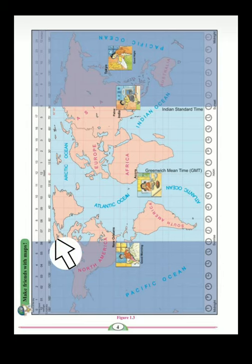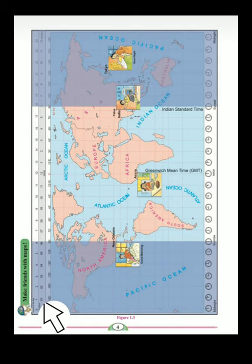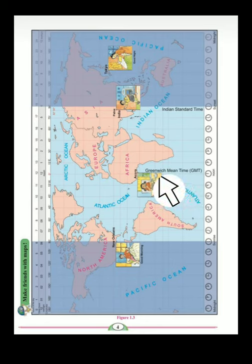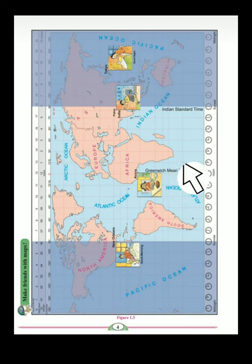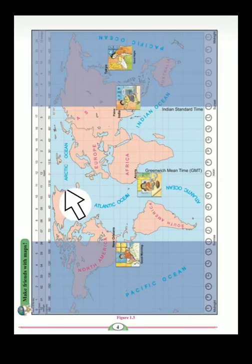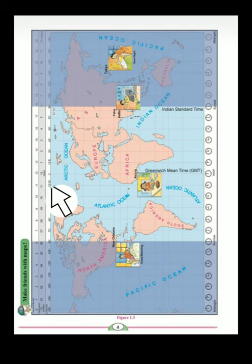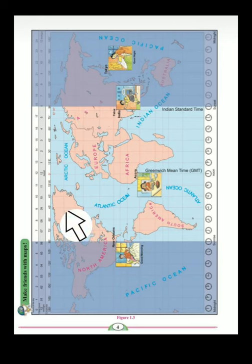Looking closely at the diagram, we can see three things: longitudes, clock hours, and hours of the day. Longitudes are lines running from north to south — they are imaginary lines on the earth drawn to help understand timing and locations. Lines running west to east are called latitudes. At the center is zero degree longitude; those moving east are marked E, and those moving west are marked W.